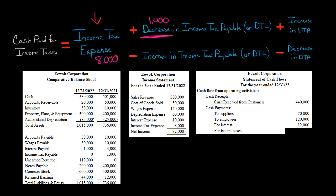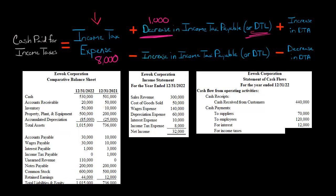We're going to add that to income tax expense. If you think about it, it makes sense — why would income tax payable decrease? It decreased because we owed some income tax before and we're just now paying it, so that should be part of the cash paid for income taxes. Because I wanted to give you a simple example, if you look here, you will not see any deferred tax liability or deferred tax assets. So now, adding this together: $8,000 of income tax expense plus that $1,000 decrease in income tax payable.